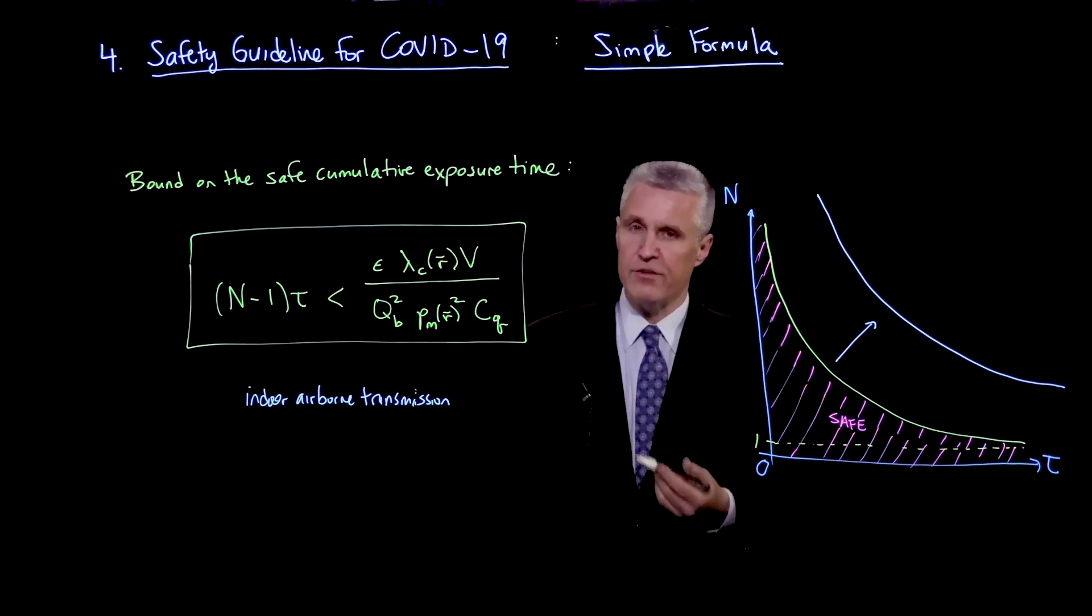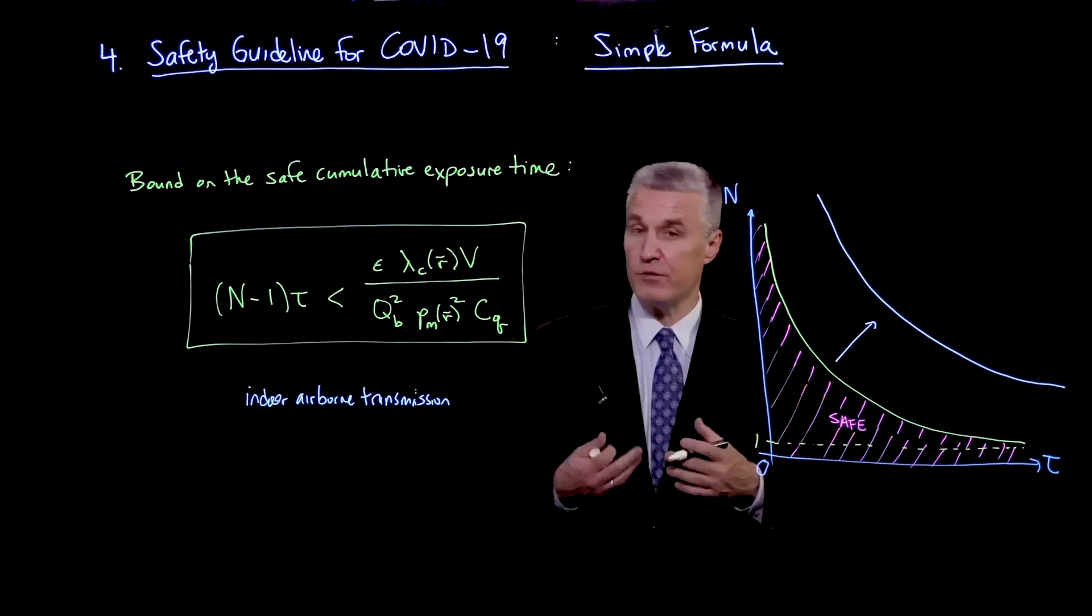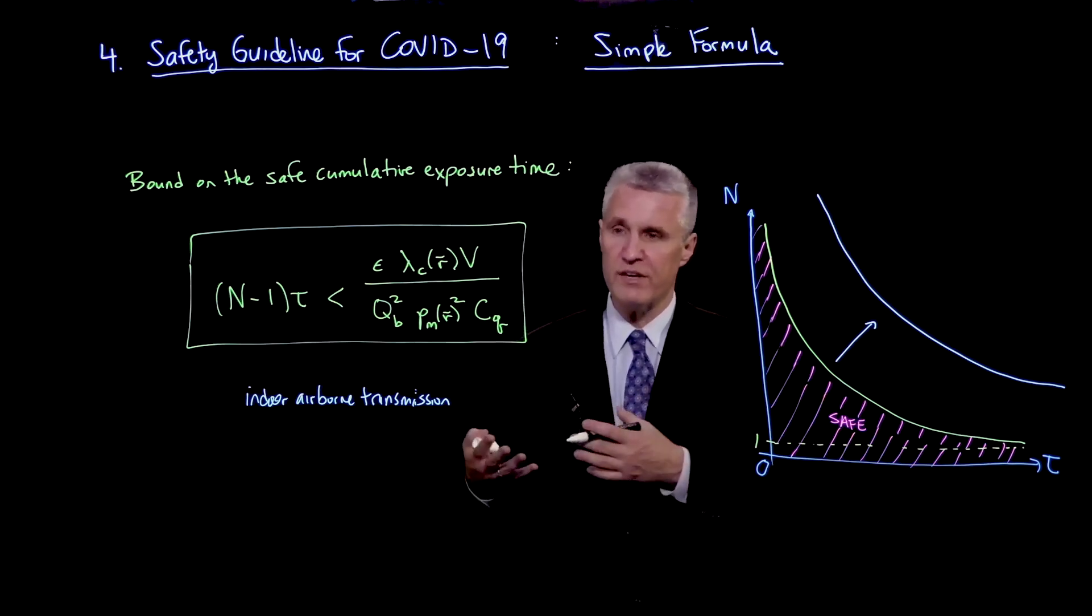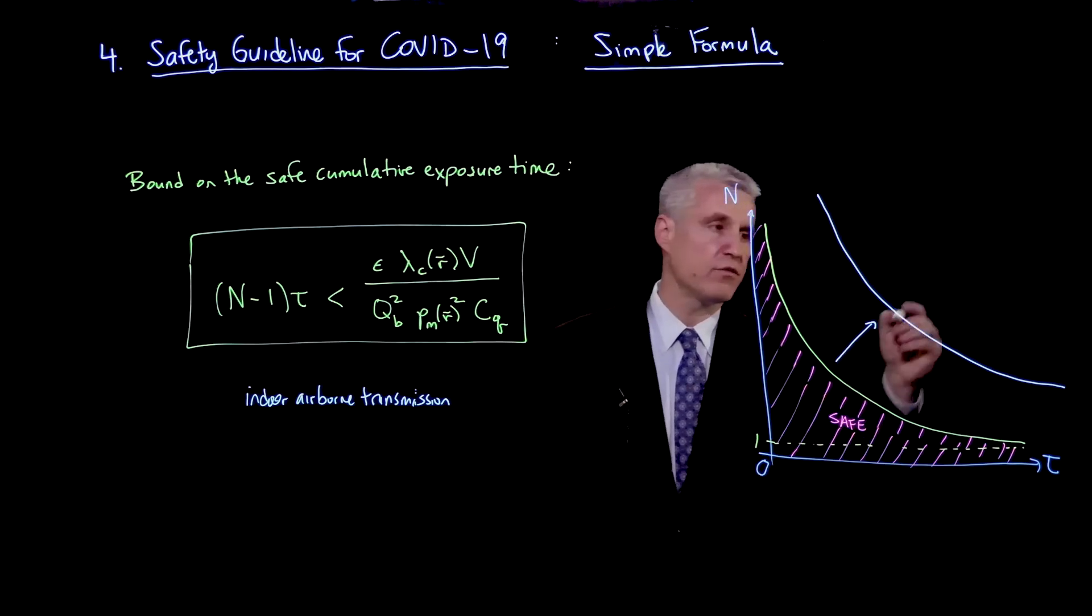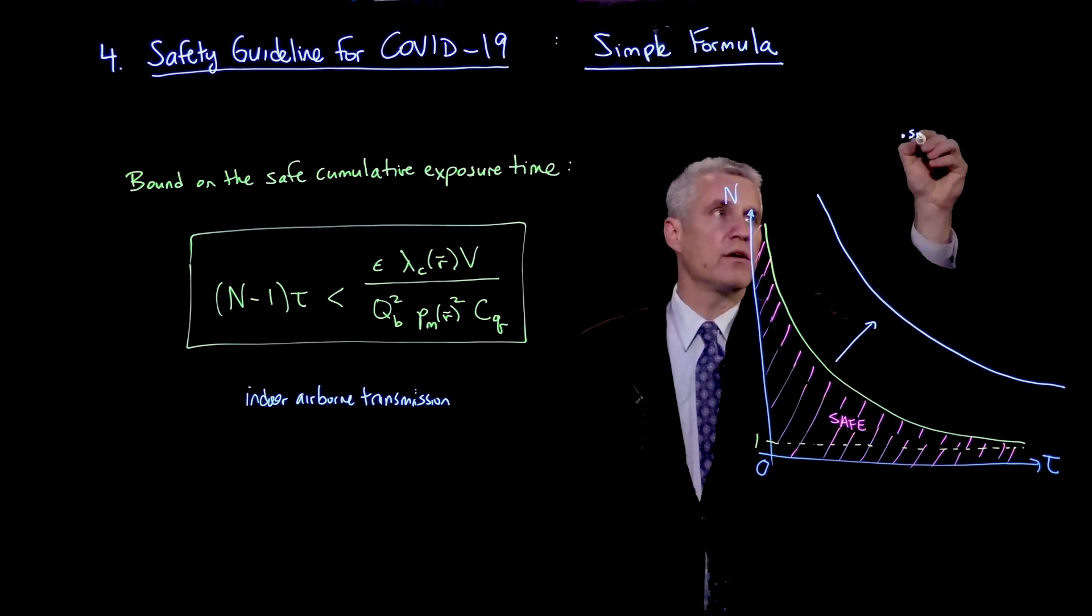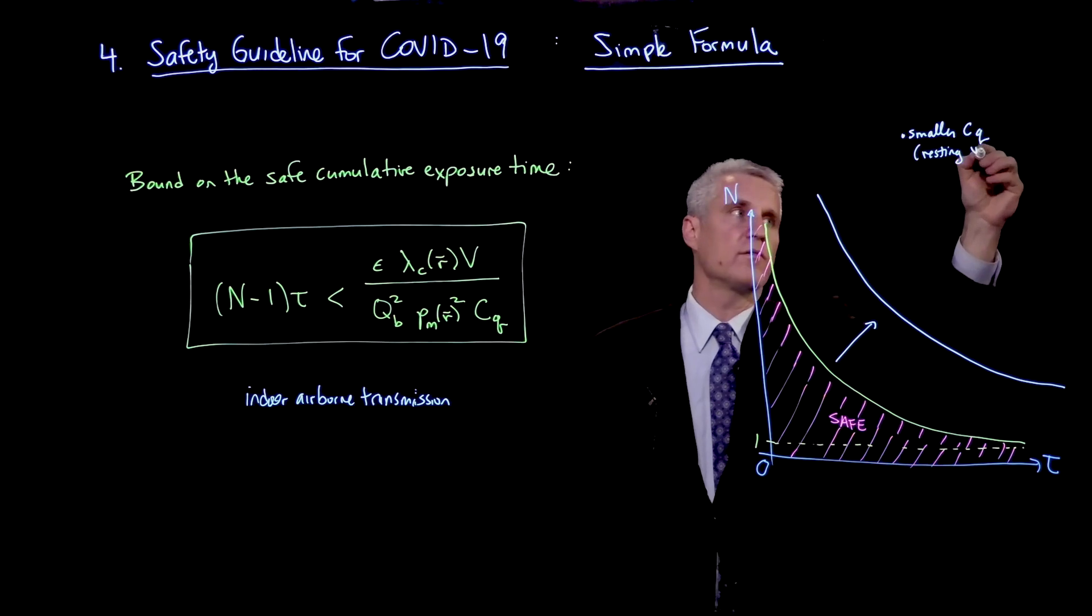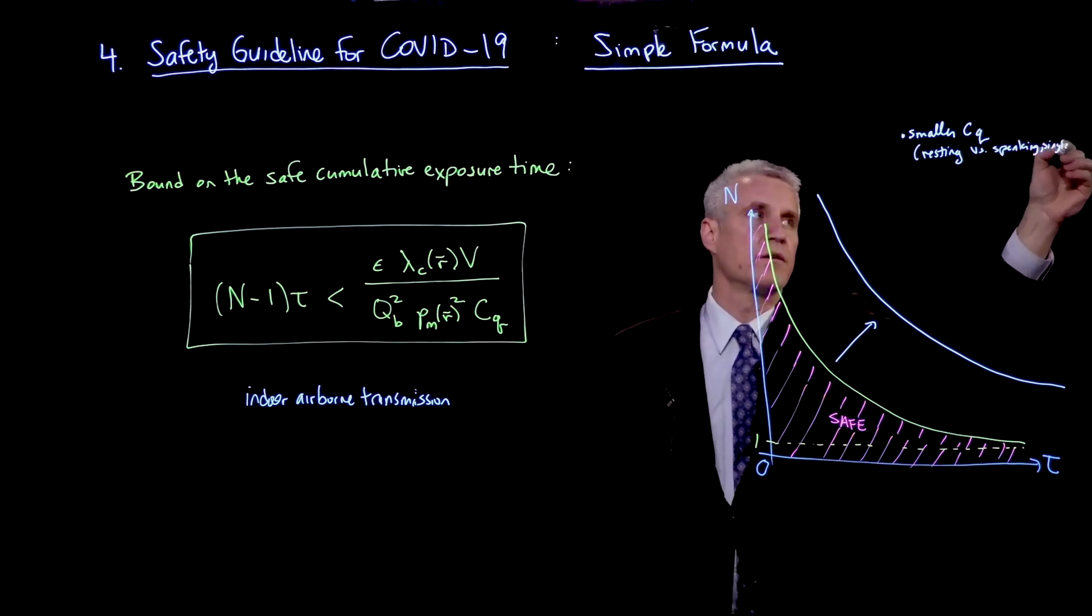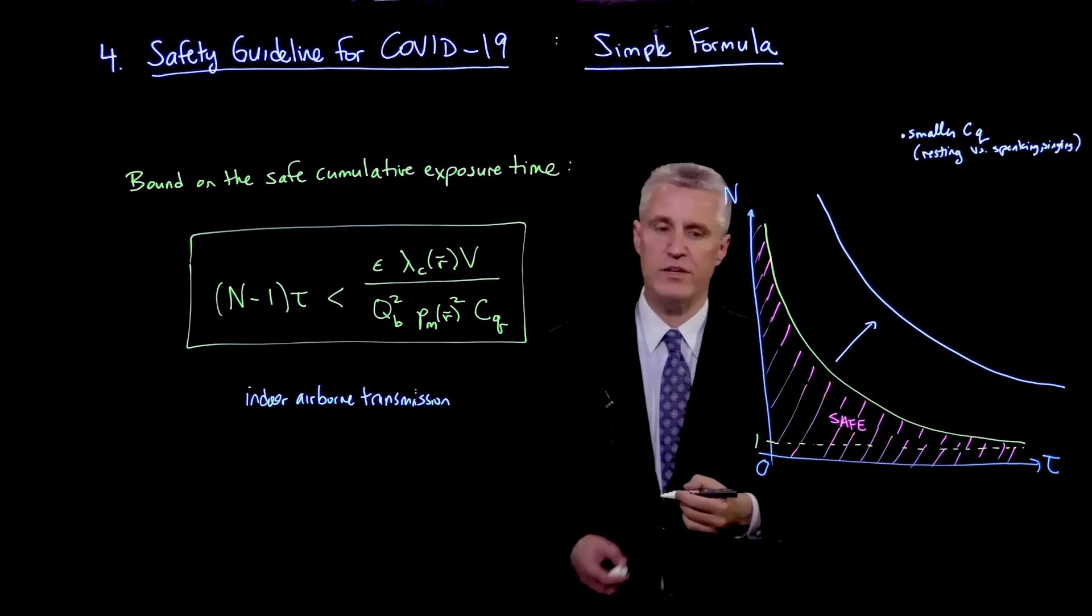So CQ is a disease-specific parameter, but we will see that CQ does depend on the type of respiration and activities such as singing or heavy exercise or loud speaking are much worse than resting or breathing. So to get in this direction, we could do a smaller CQ, which could be resting versus speaking or singing. And we'll come back to characterizing that more carefully, so we can at least change the type of activity in the room.